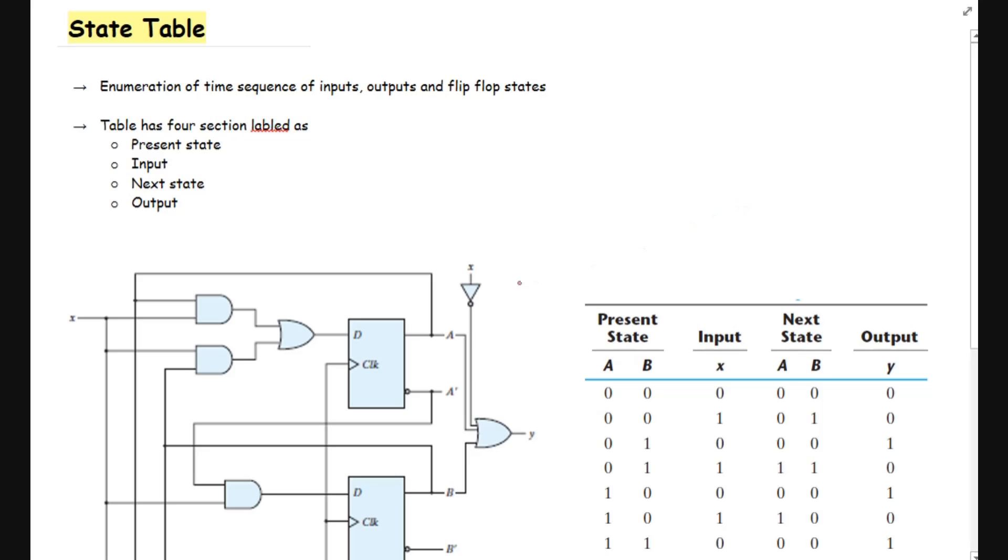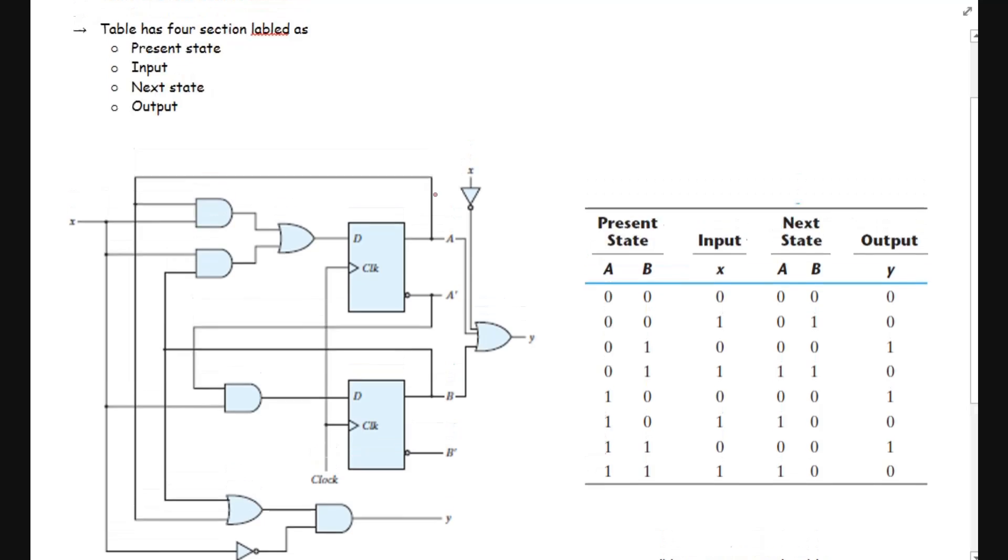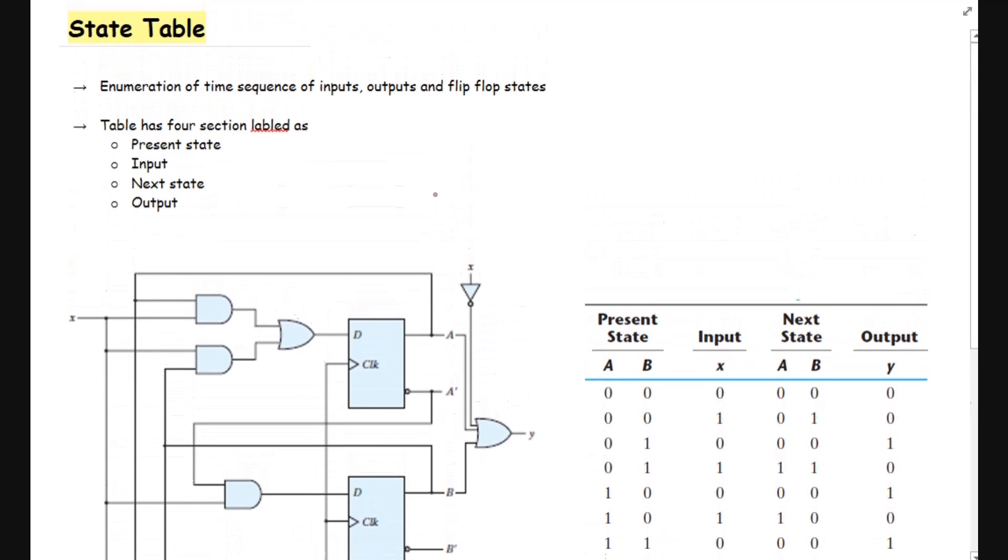Before this you have covered what is a state equation and you have solved an example of sequential circuit and derived the state equations for that circuit. Again I am going to give that example here because state equation topic is always followed by a state table.